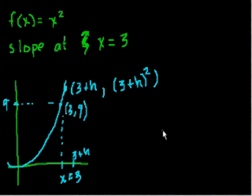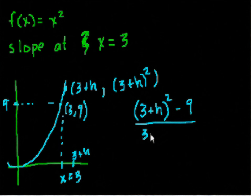So we want to find the slope between these two points. So what's the slope? So it's a change in y. So it's 3 plus h squared minus this y, minus 9, over the change in x. Well, that's 3 plus h, minus 3.